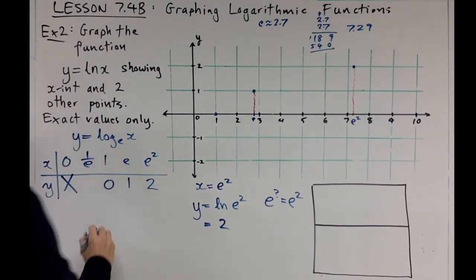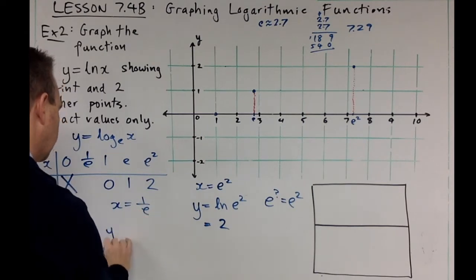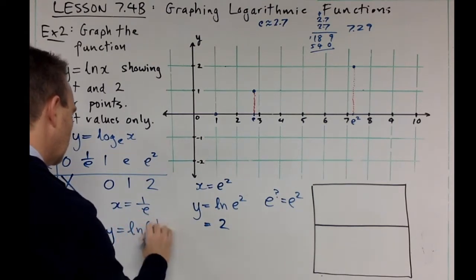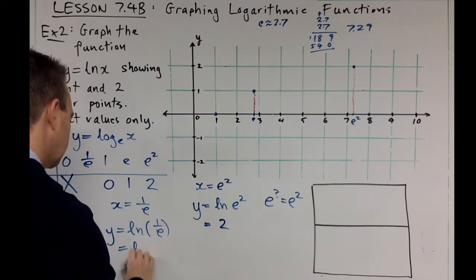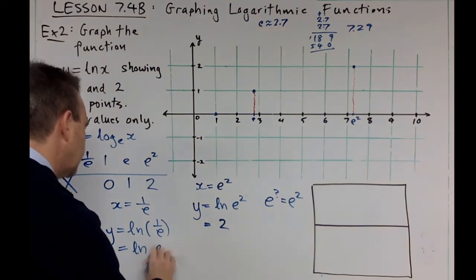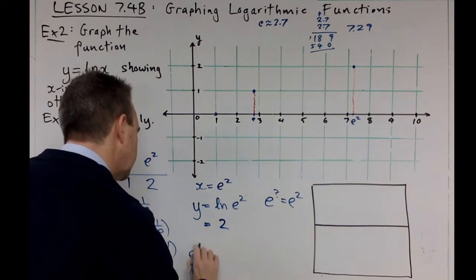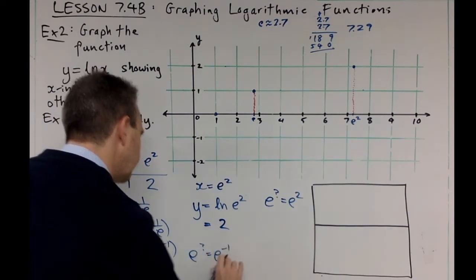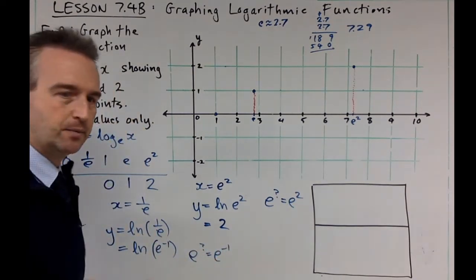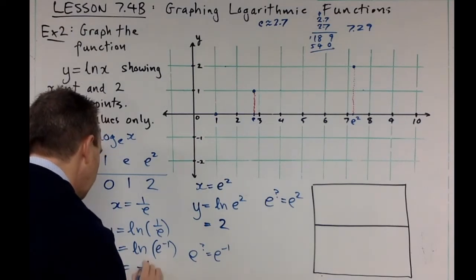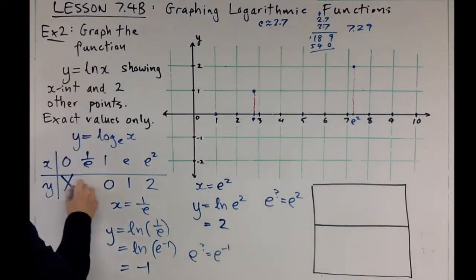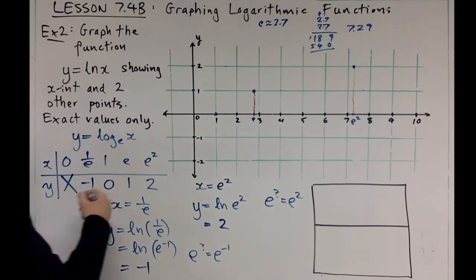So if x is one over e, y equals ln one over e. What's that? One over e can be written as e to the minus one. And think - e to the power of what equals e to the minus one? That's got to be just minus one, obviously. So we've got the point one over e, minus one.